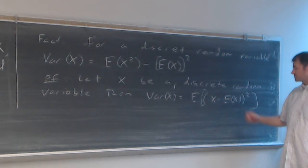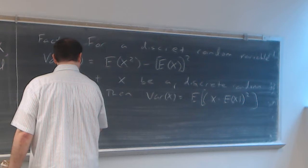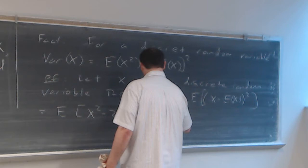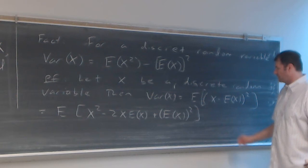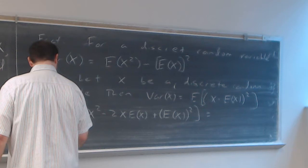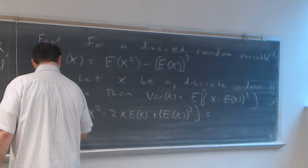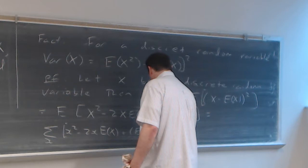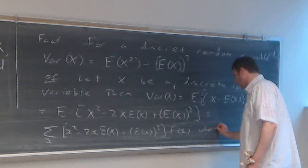This is equal to the expected value of — expanding out (x minus E[x])² gives x squared minus 2x times E[x] plus E[x] squared. Since we're talking about a discrete random variable, that equals the sum over the x values where f(x) > 0, of (x² − 2x·E[x] + E[x]²) times f(x), where f(x) is the probability mass function.